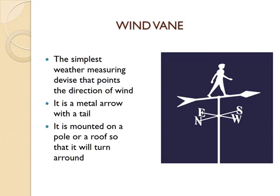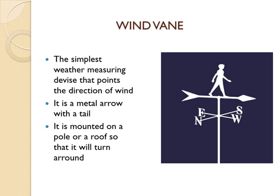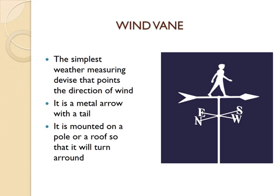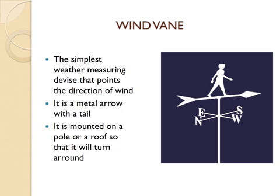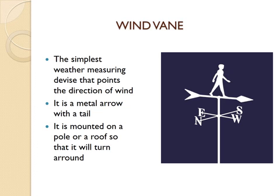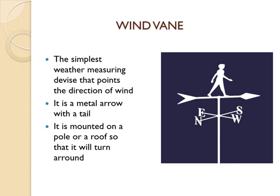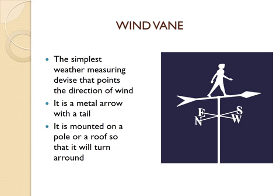The next is the wind vane. Wind vane is the simplest weather measuring device that points the direction of wind. It is a metal arrow with a tail, mounted on a pole or a roof so that it can turn around. It is one of the simplest devices used to check the direction of the wind. When wind blows, the arrow points in the direction of the wind, indicating the wind direction.